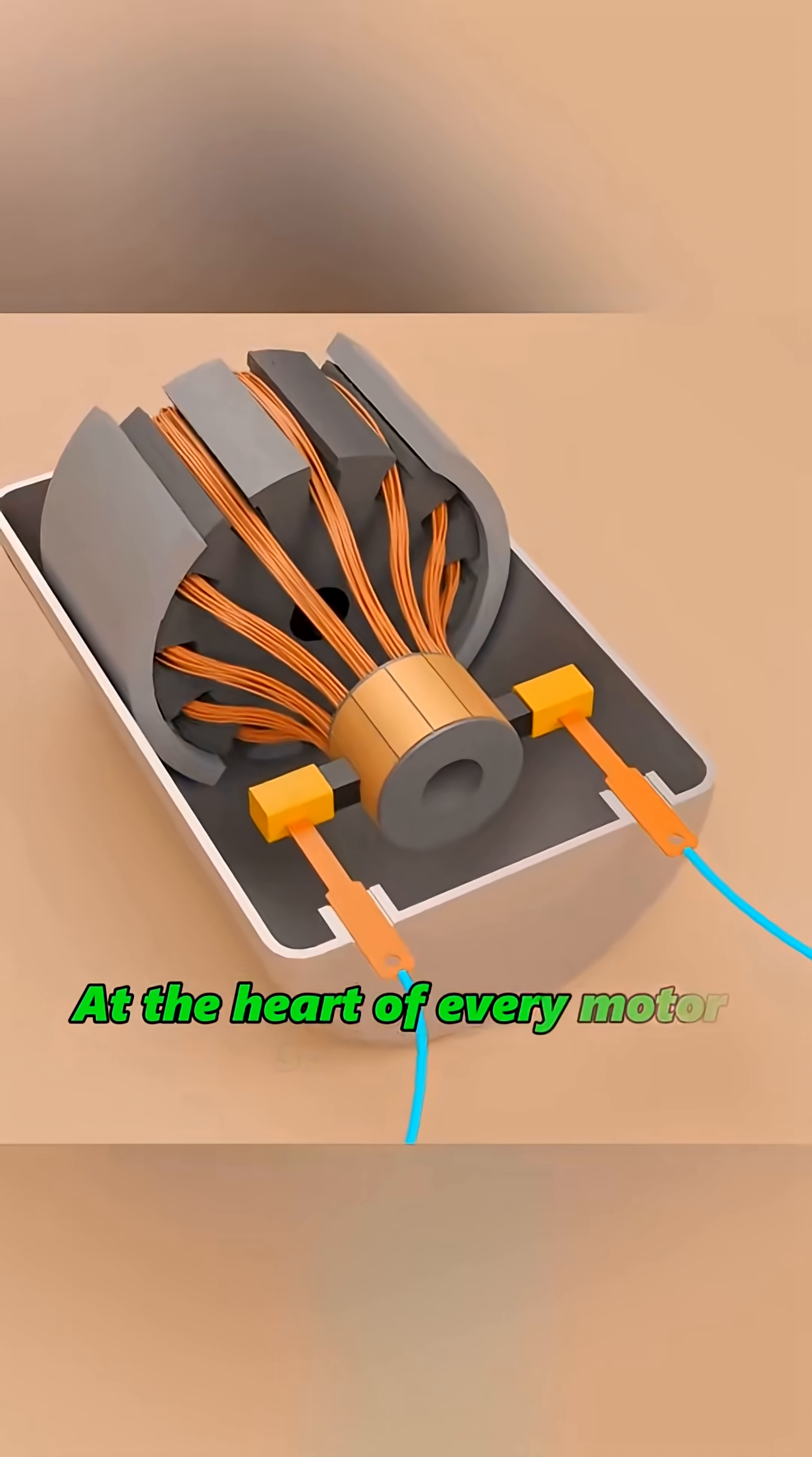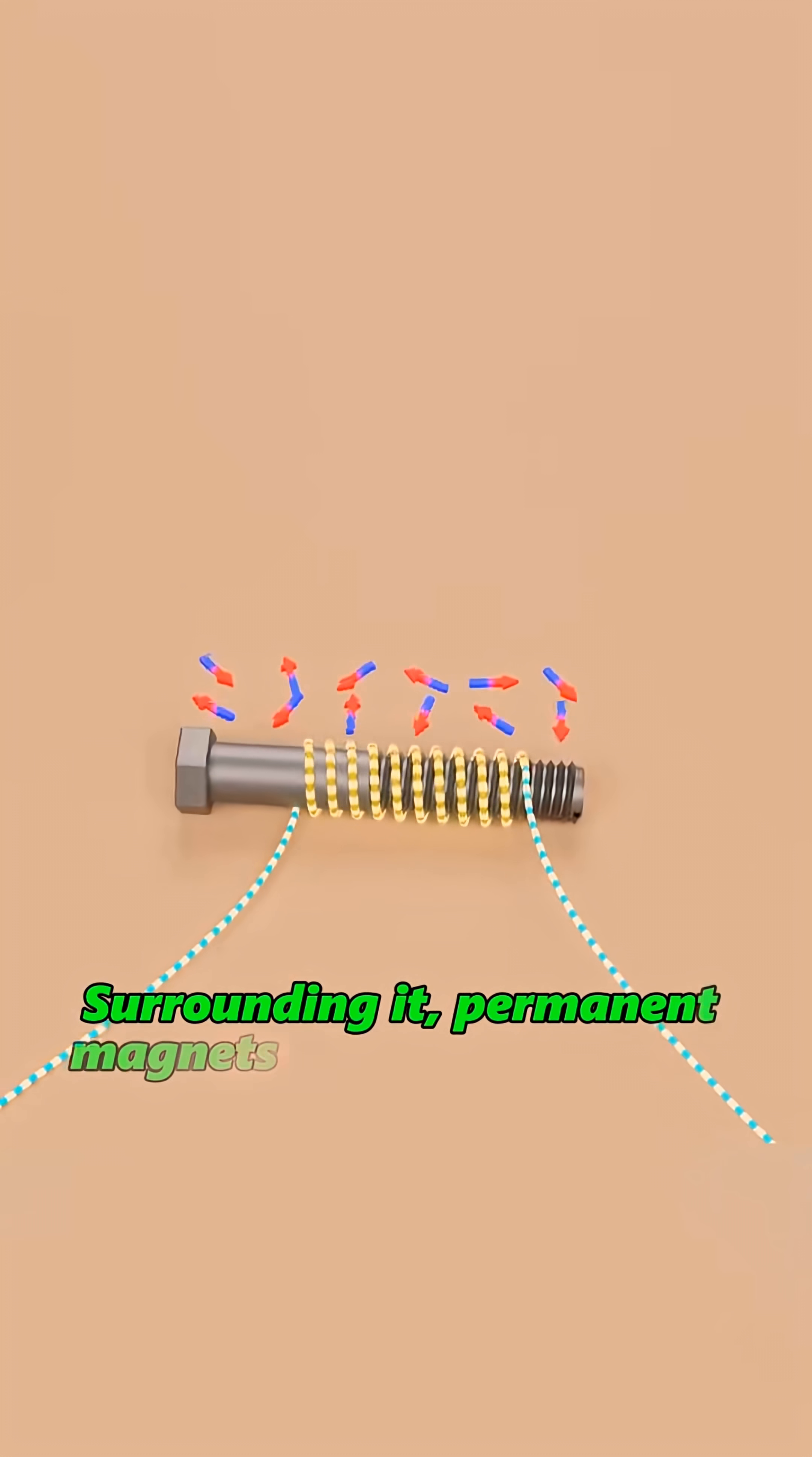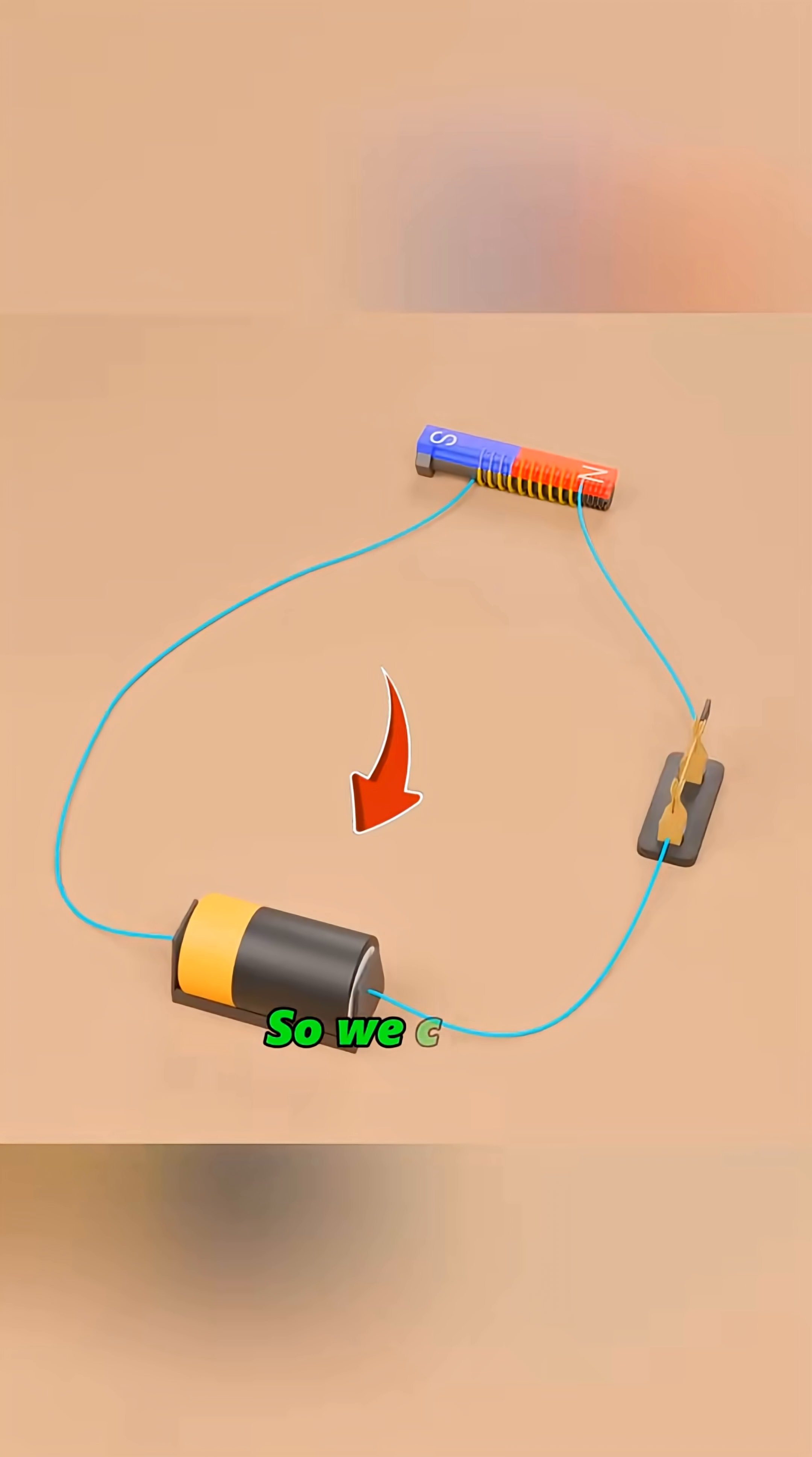At the heart of every motor sits a rotor, a coil that becomes an electromagnet. Surrounding it, permanent magnets wait like creditors. Opposites attract, like repel. The coil snaps into alignment and immediately stops. So we cheat.